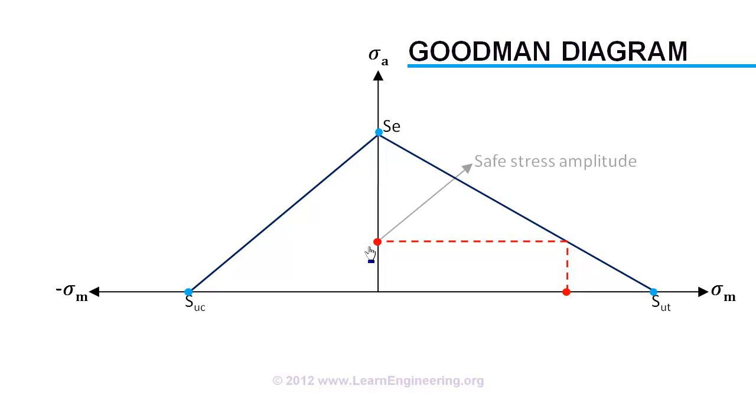Similar analysis can be done considering safe limit of amplitude zero condition as yield strength of material. This is known as Soderberg diagram. Generally Goodman analysis is the most preferred one.